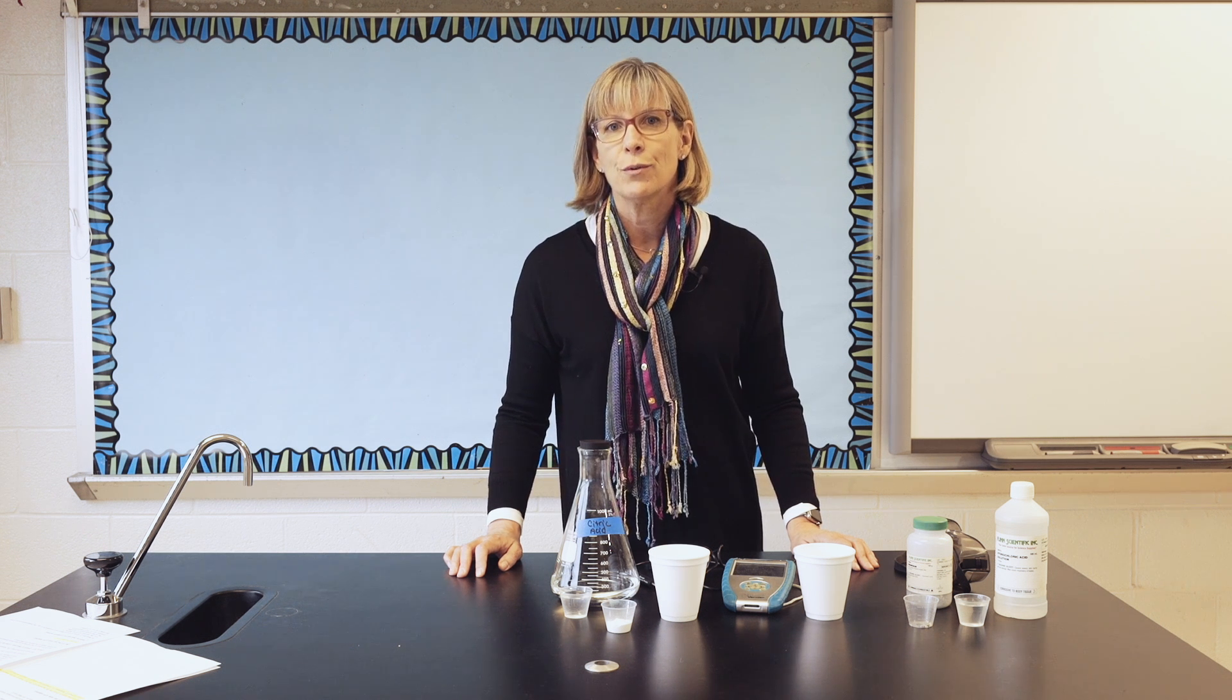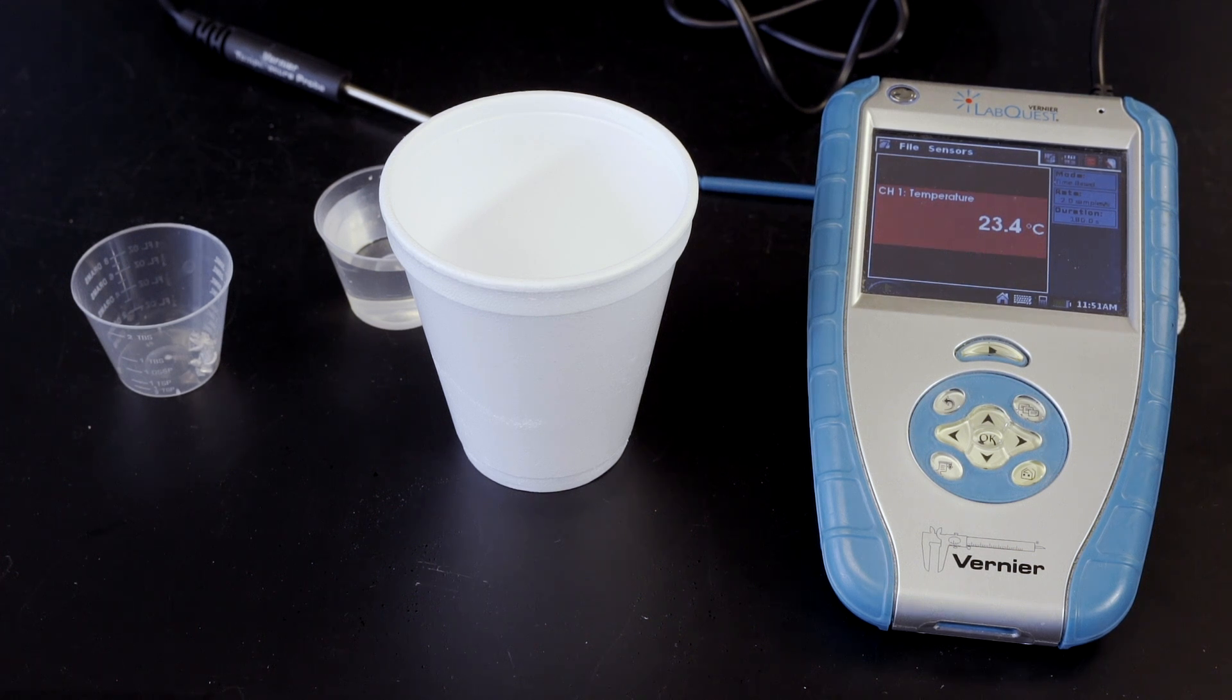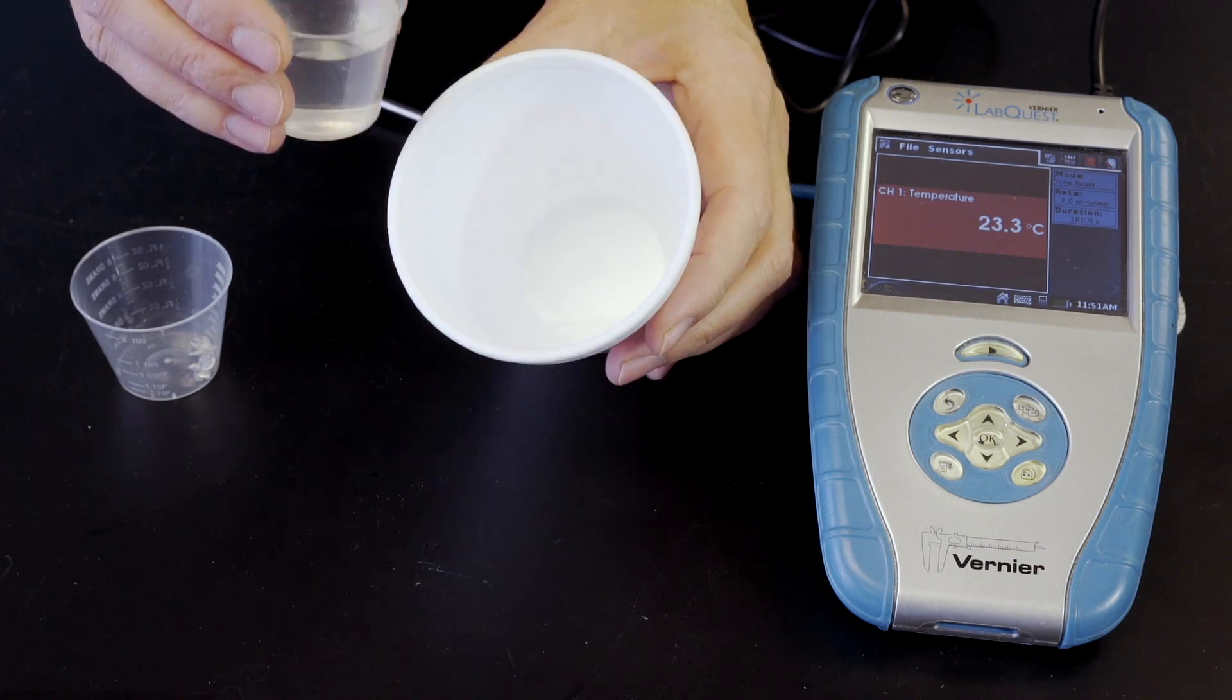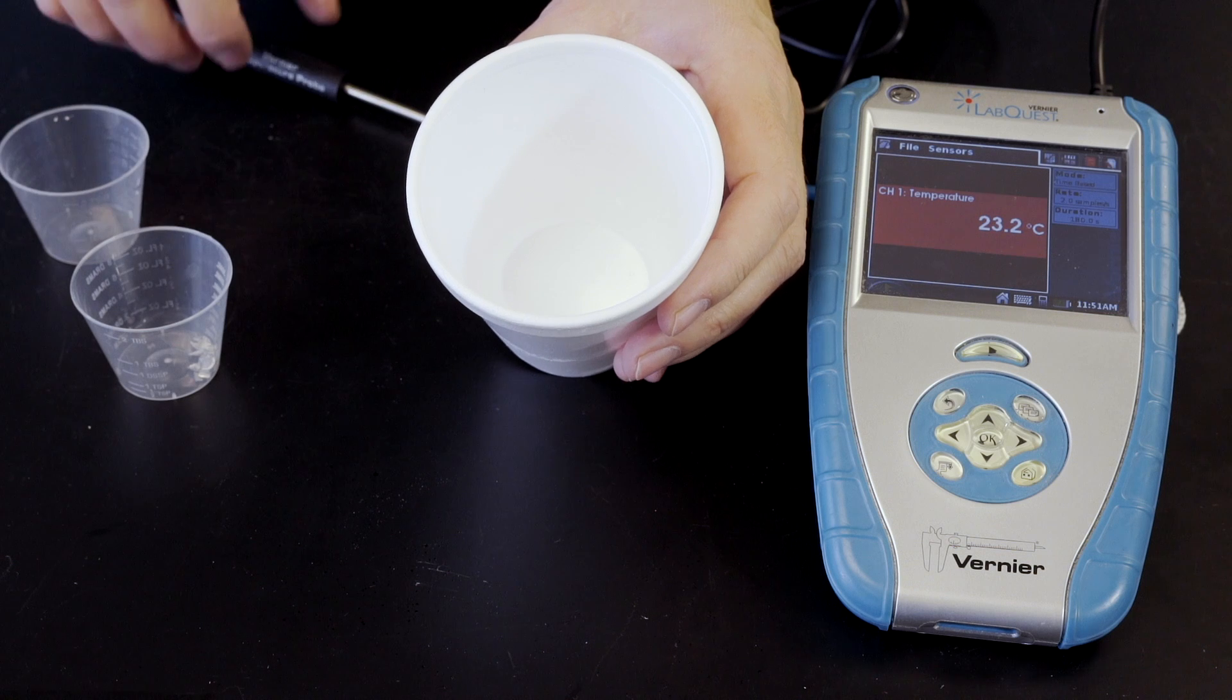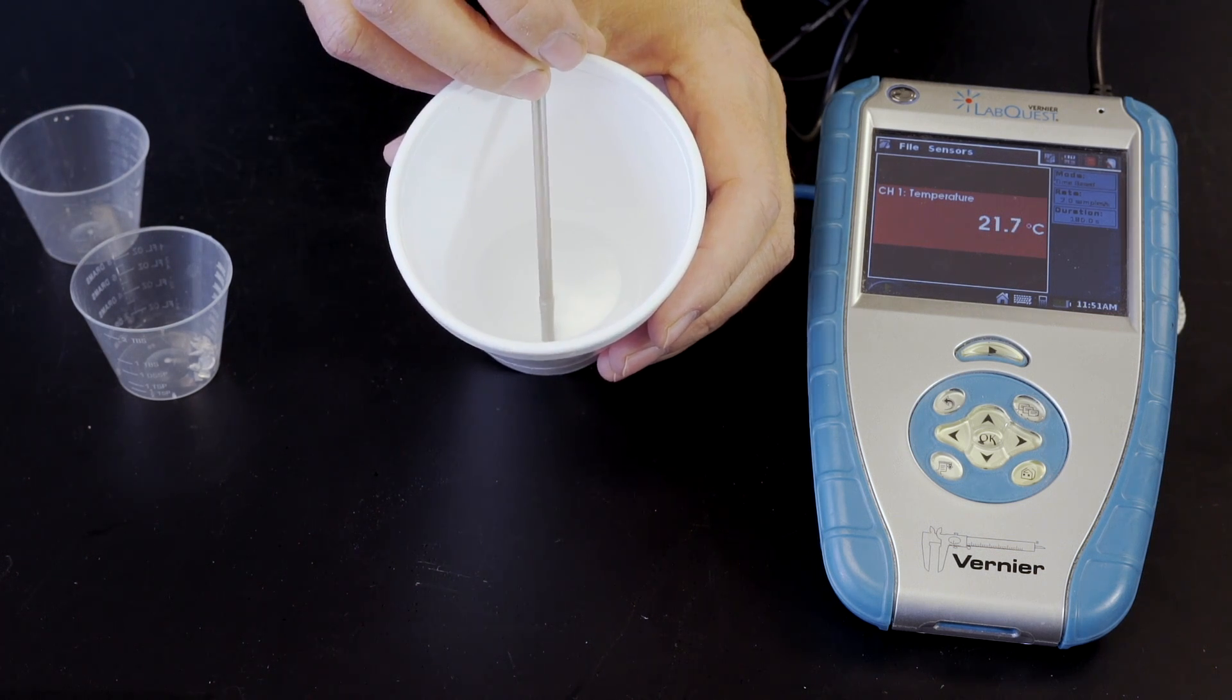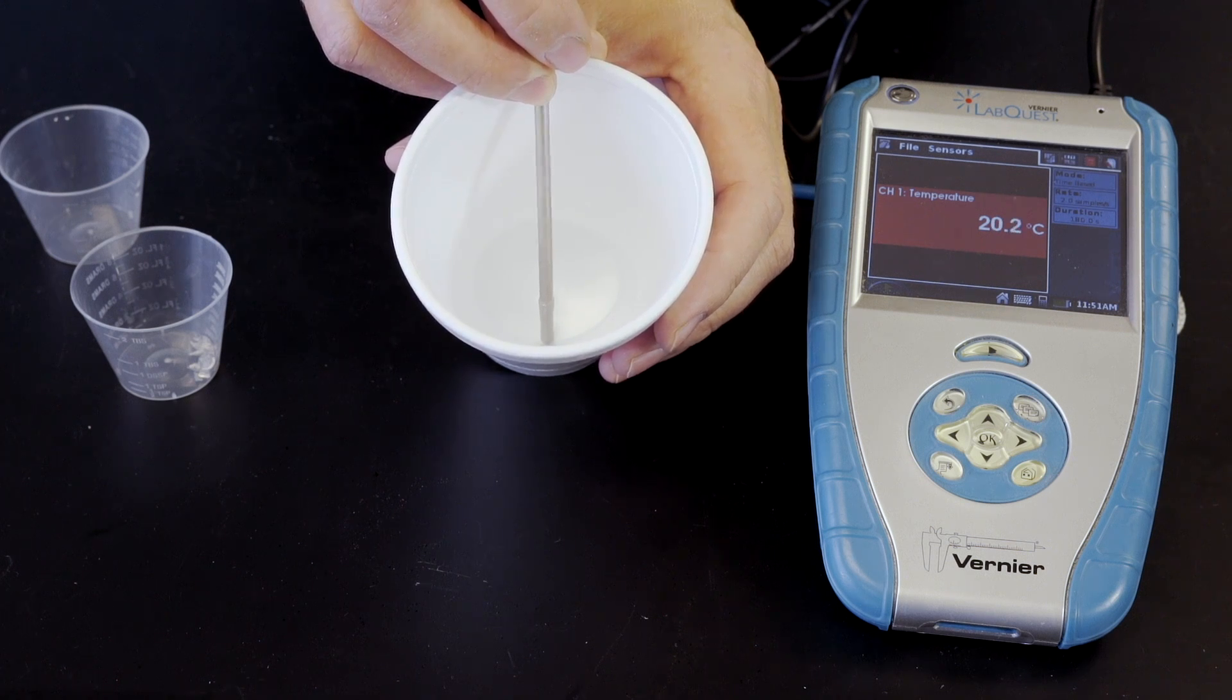Now we'll do reaction two. In reaction two, 30 mLs of hydrochloric acid is added to the cup. The temperature probe is placed in the cup. Once the temperature equilibrates and stops changing, we'll begin recording.